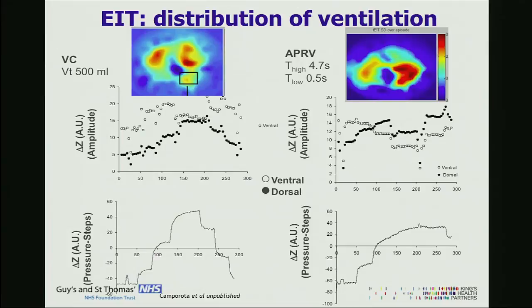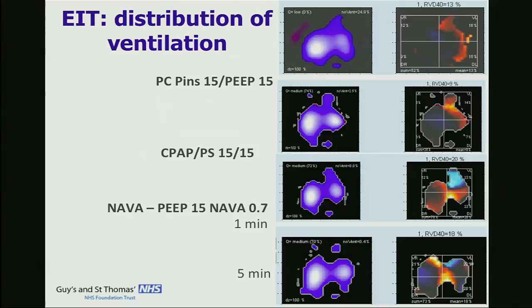EIT can alert us about ventilation distribution changes. This is a recent patient studied with pressure control, CPAP pressure support, and NAVA ventilation. The tidal images are similar across modes, but there is a complete change in the delay of ventilation. The left lung is very delayed in opening under mandatory ventilation. When the patient goes into spontaneous ventilation, the pattern reverses completely — areas that were opening late are now opening early. It's a complete difference between mandatory and spontaneous ventilation.